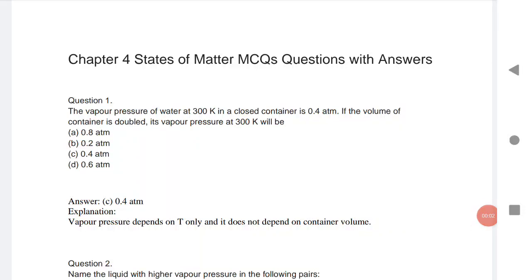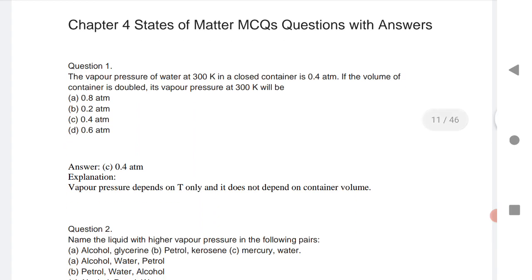Welcome to STA Academy. Today we are going to discuss TSAP MSET Chapter 4: States of Matter, important MCQs of chemistry. The first question is: the vapor pressure of water at 300K in a closed container is 0.5. If the volume is doubled, its vapor pressure at 300K will be?